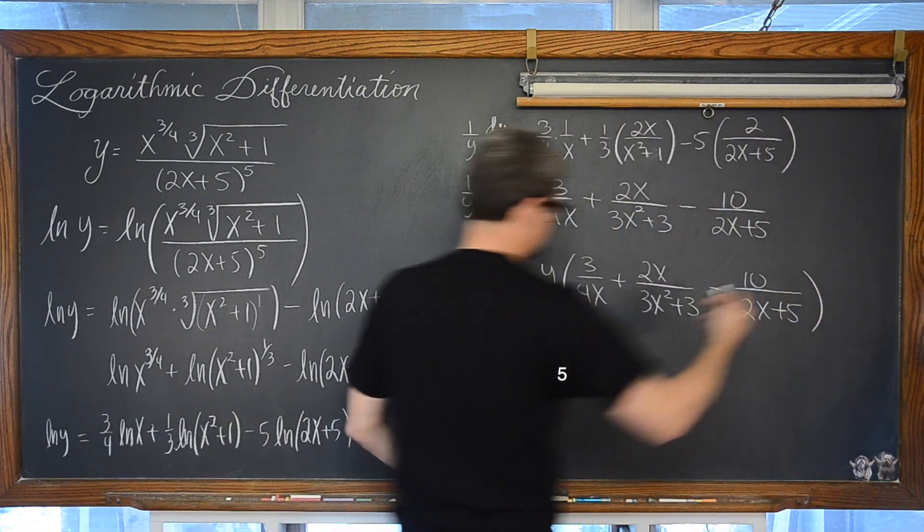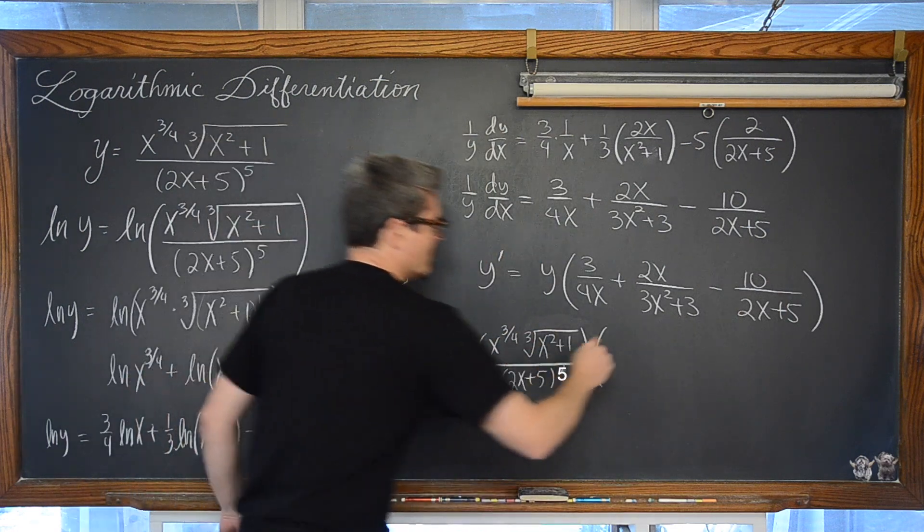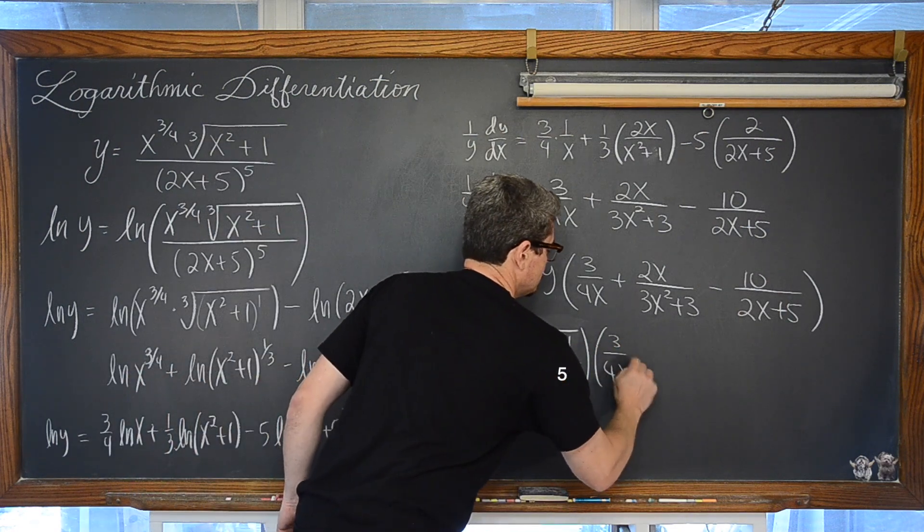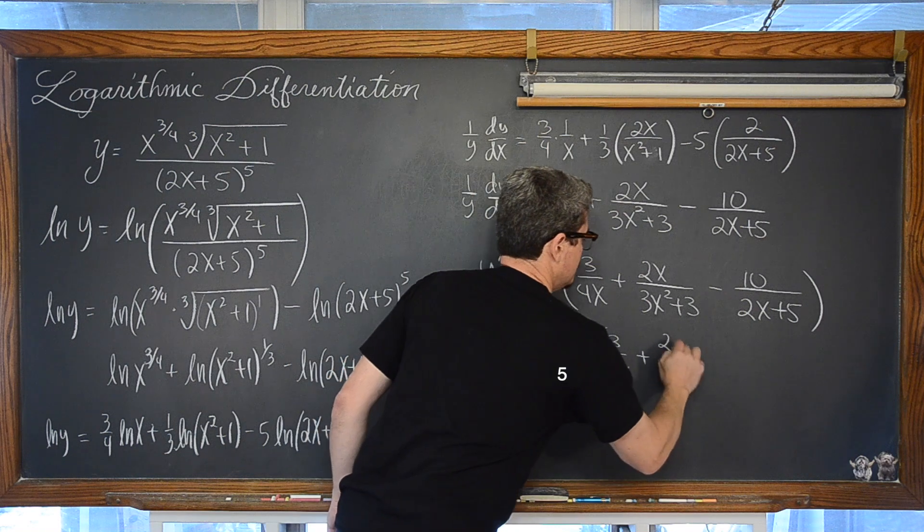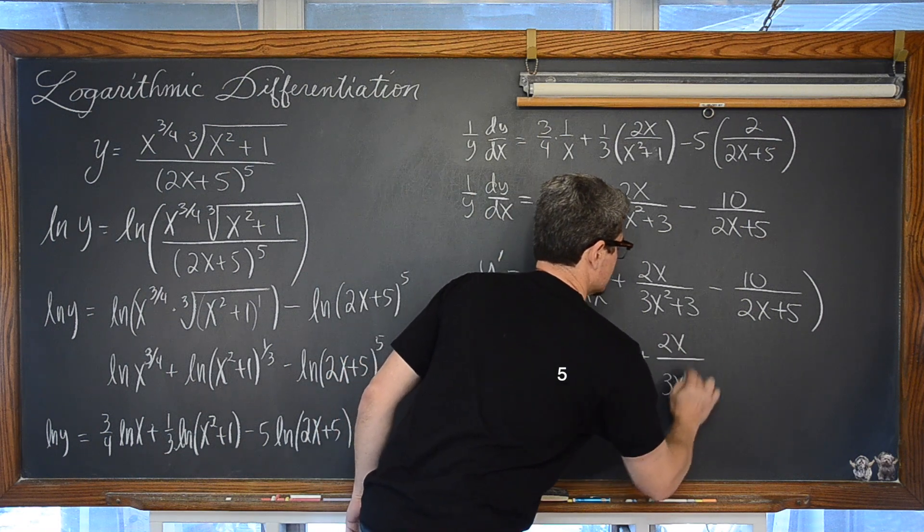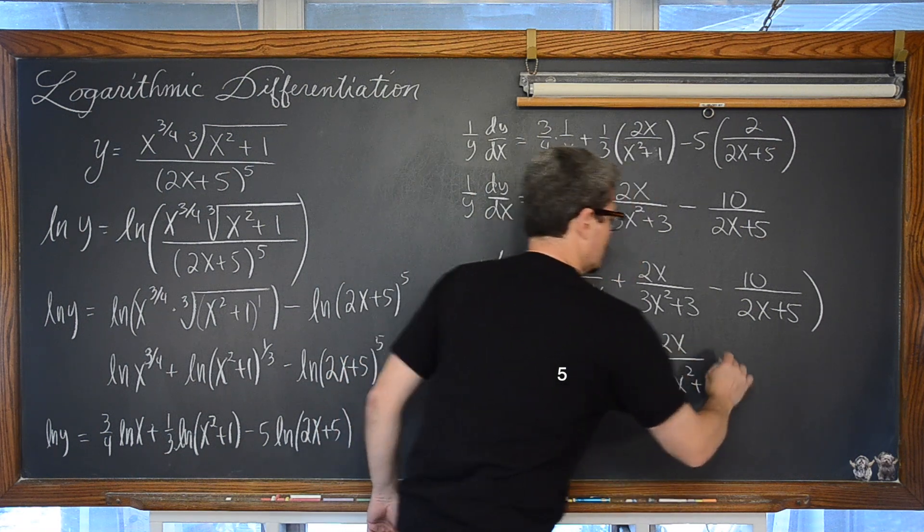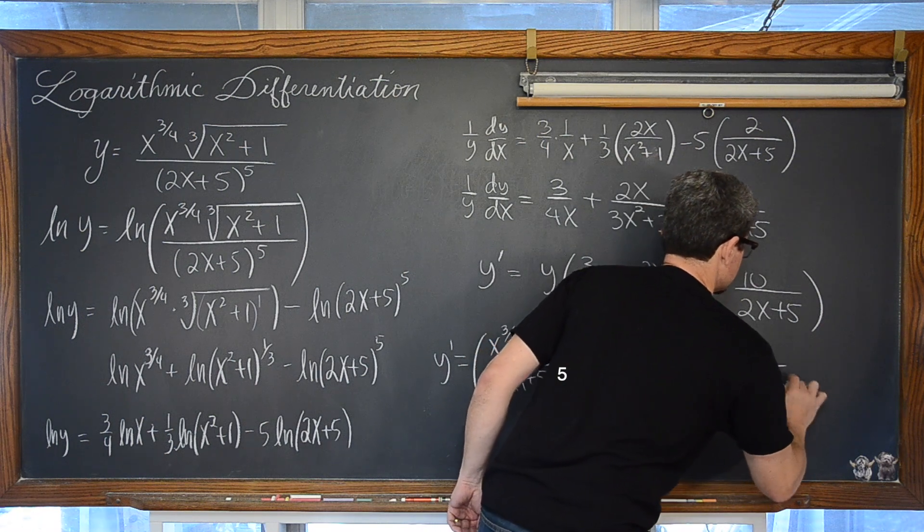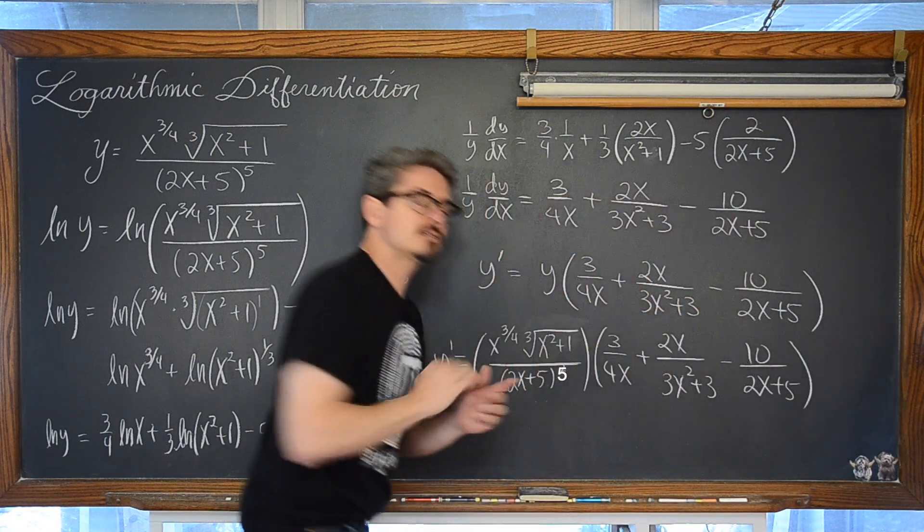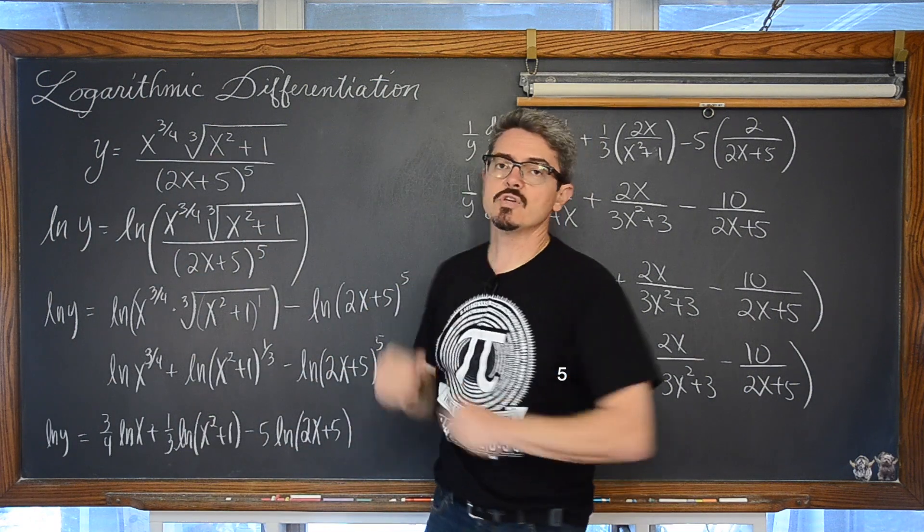well, all of this. we have 3 over 4x plus 2x over 3x squared plus 3 minus 10 over 2x plus 5 and that is logarithmic differentiation.